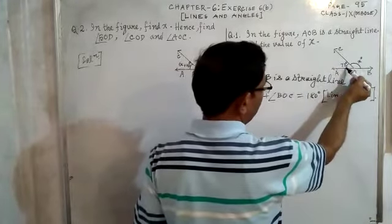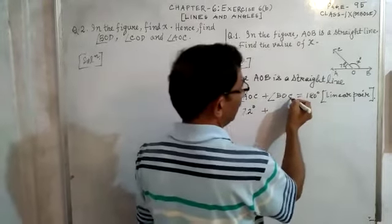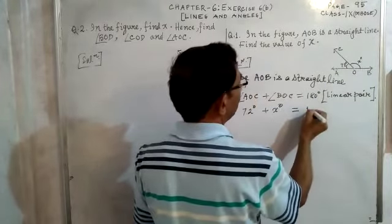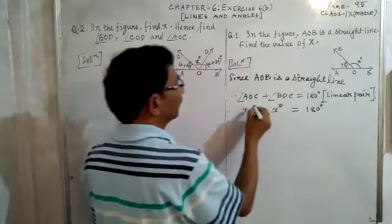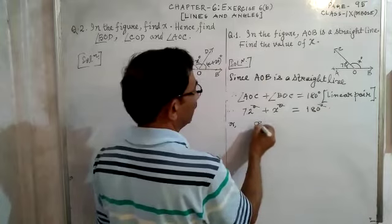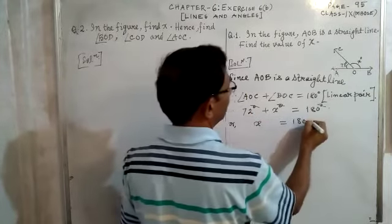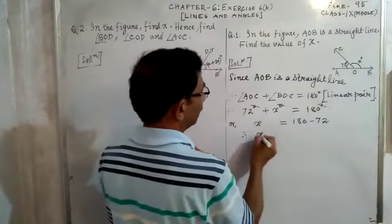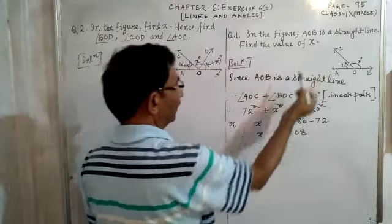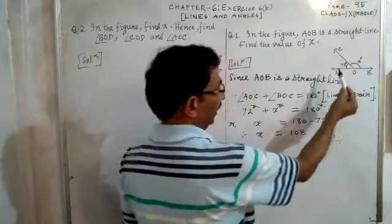Therefore, angle AOC equals 72 degrees plus angle BOC equals x degrees, which is equal to 180 degrees. We cancel the degree from both sides. Taking 72 from the left side to the right side: x = 180 minus 72, therefore x is equal to 108. That is the answer to this sum.